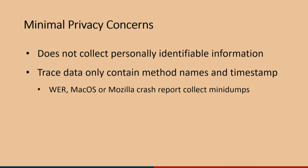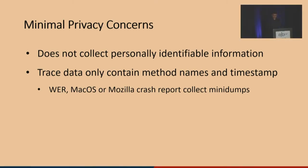Hubble also strives to protect user privacy. Existing error reporting systems such as Windows Error Reporting, macOS, or Firefox crash reports collect a mini-dump of the memory image. In comparison, Hubble's traces are far less sensitive — they only contain the method name and the timestamp, and do not contain any variable values. And like all error reporting systems, consent is required to collect users' data.